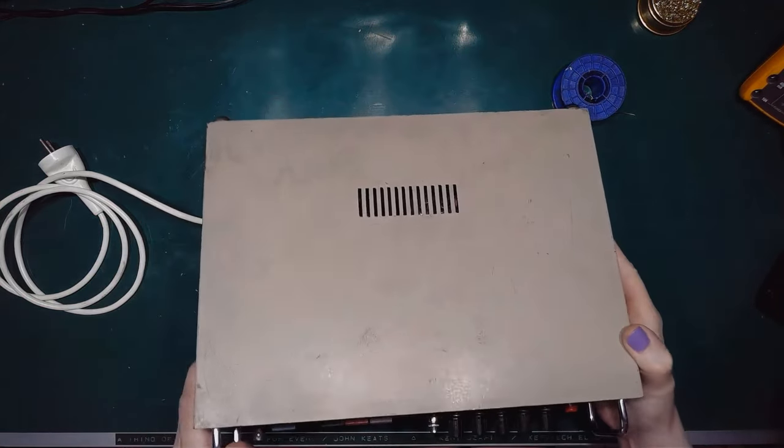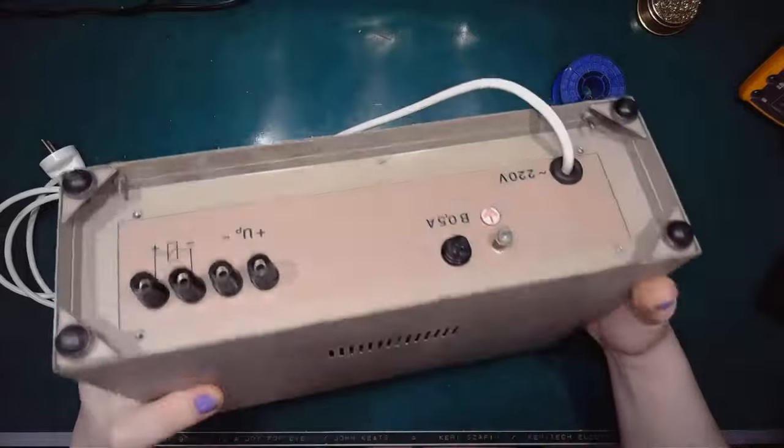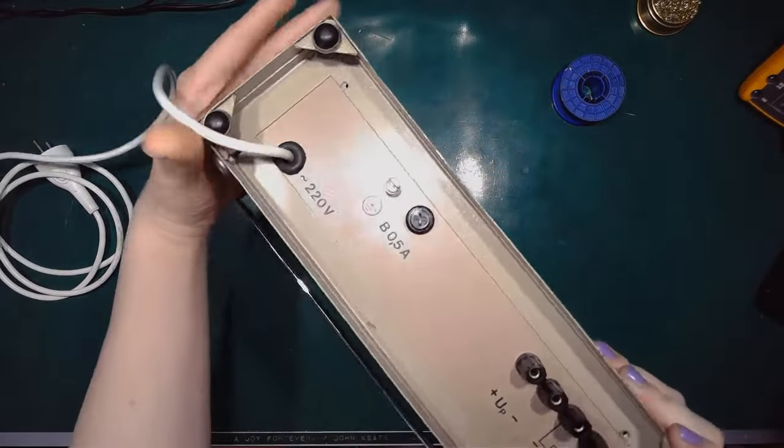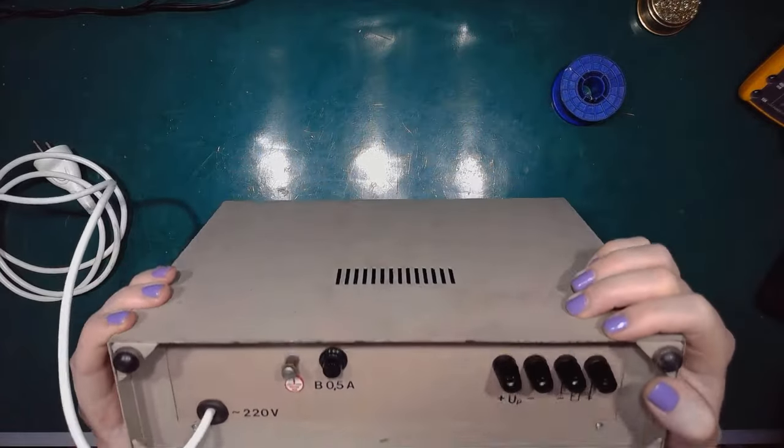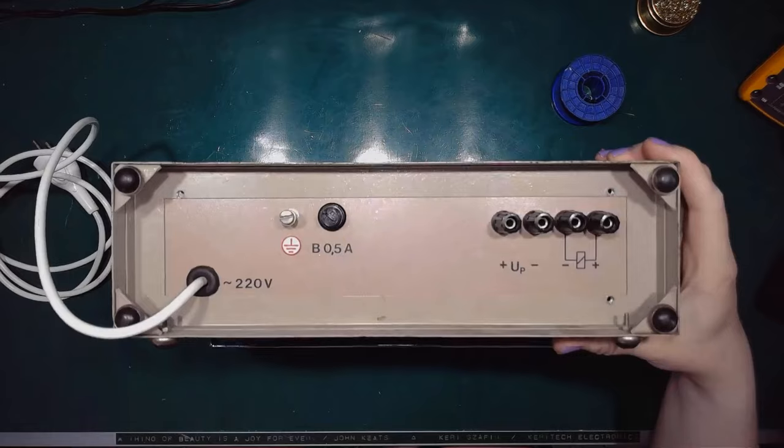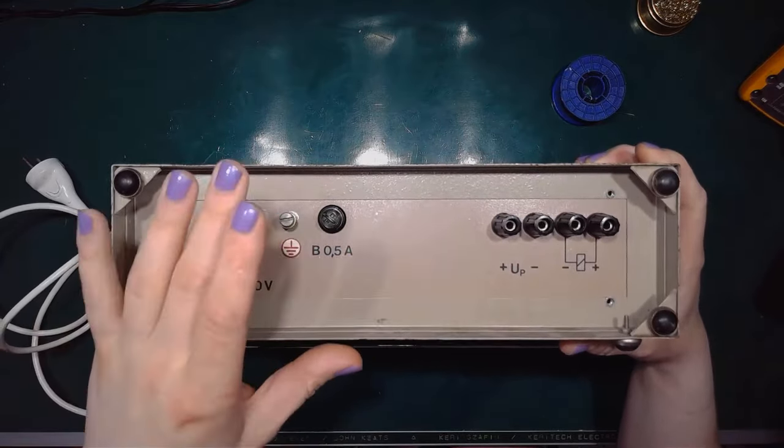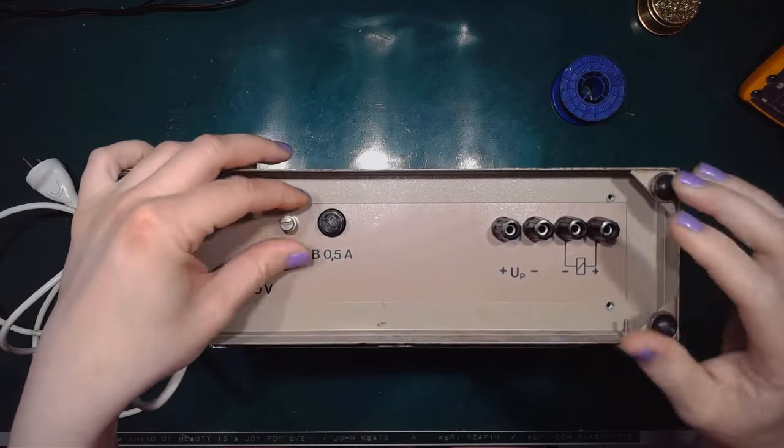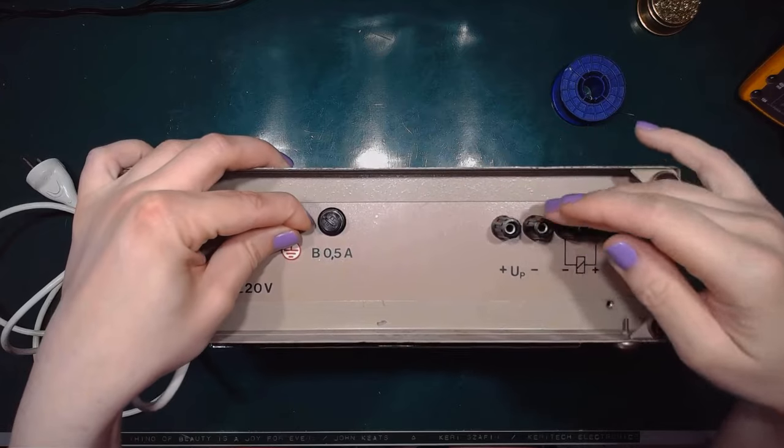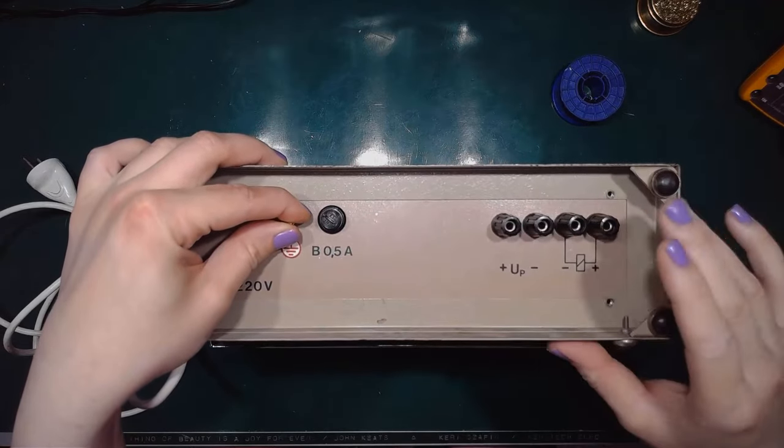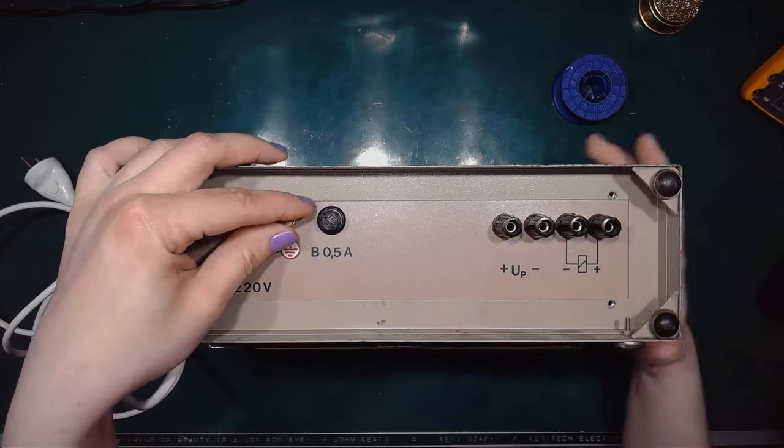That's more like it. So, this beige enclosure, it was made in 1970s in Poland. On the back panel we've got the main switch, fuse socket, grounding part, and the relay power and coil terminals.